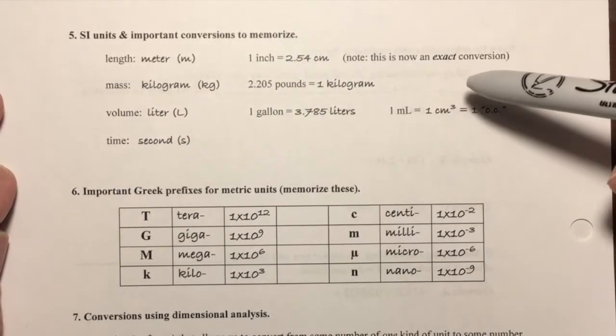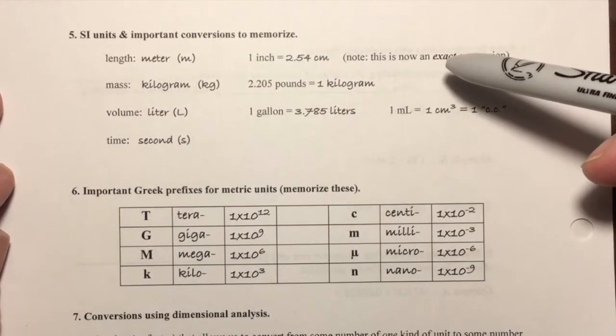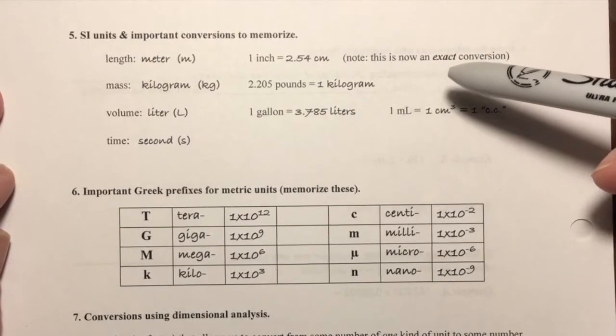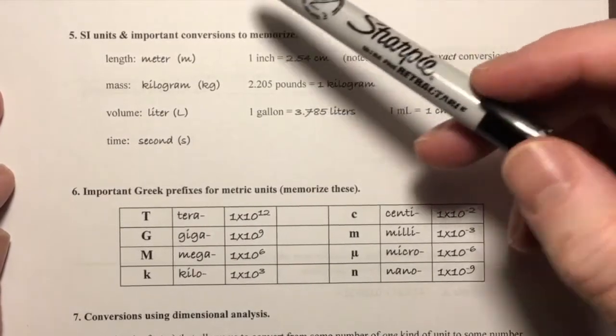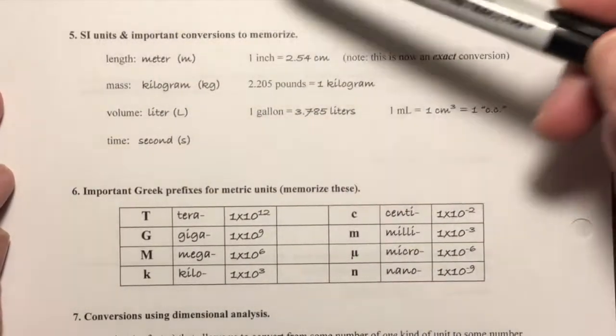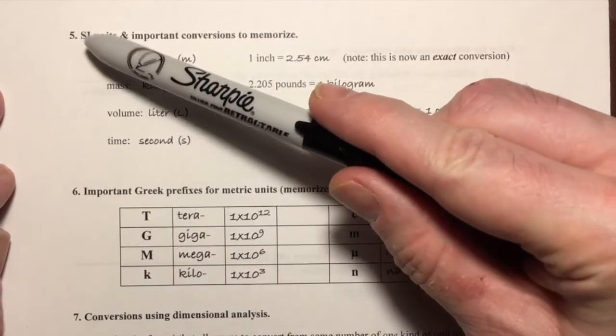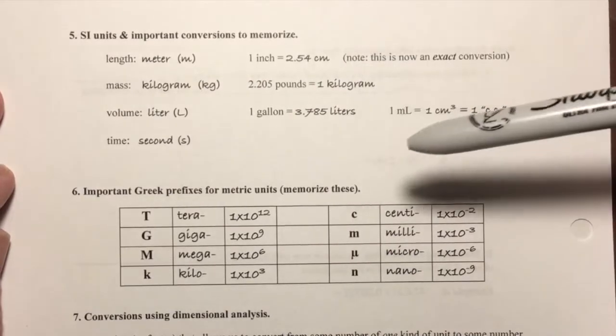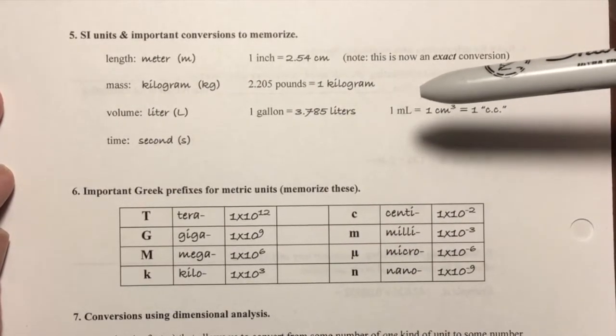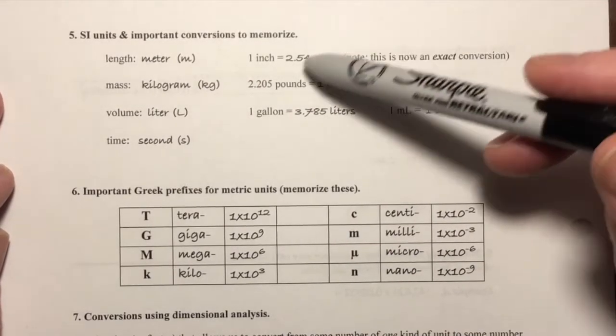Okay students, in this video I'd like to start talking about the SI system or the metric system. Another term for the metric system is the SI system, an abbreviation for système international in French, meaning the international system. We call it the SI system of units and important conversions that we need to know.